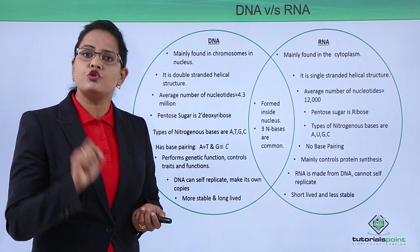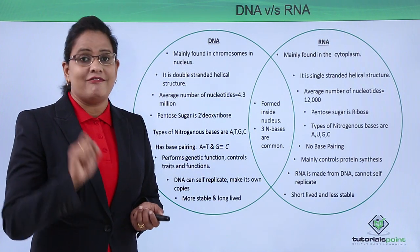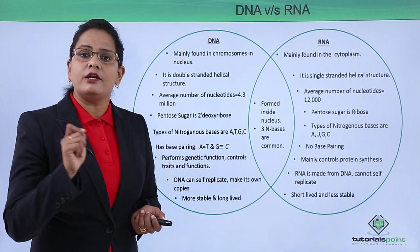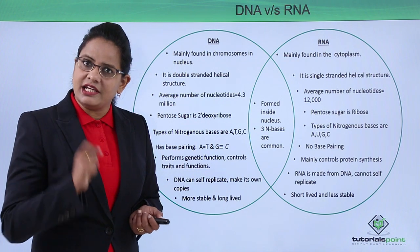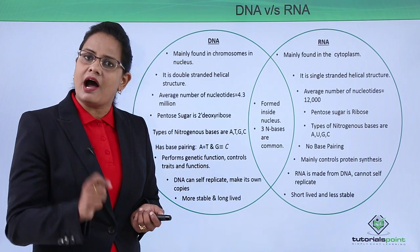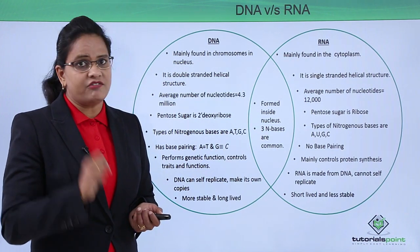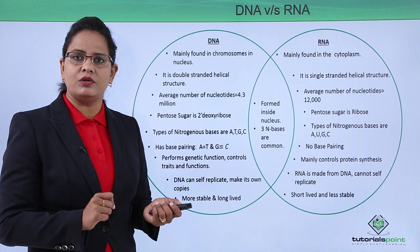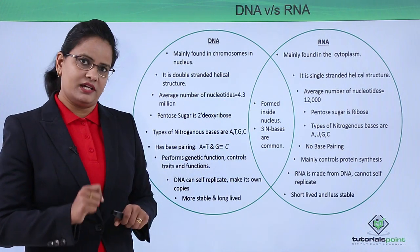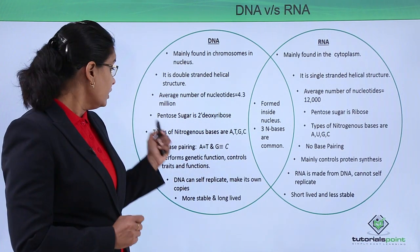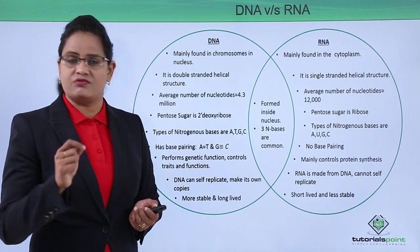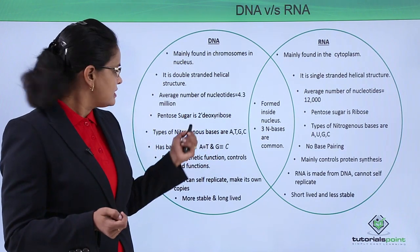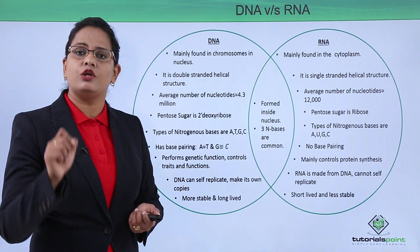In DNA, the pentose sugar present is 2-prime deoxyribose, whereas in RNA the pentose sugar is ribose. These sugars are the reason for their respective names — deoxyribonucleic acid and ribonucleic acid.